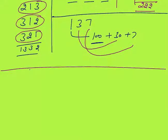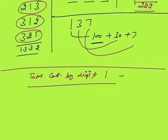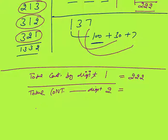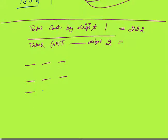Total contribution by digit 1 is 222. Same way we can find the total contribution by digit 2. The pattern will be similar — 2 can come at the hundreds place, tens place, and units place. When 2 comes at the hundreds place, its contribution is how much?